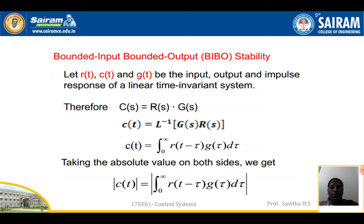Bounded input, bounded output stability. Let R(t), C(t), and G(t) be the input, output, and impulse response of a linear time invariant system. Therefore, C(s) is equal to R(s) into G(s). So C(t) equals the inverse Laplace transform of G(s) into R(s). So C(t) is equal to the integration from 0 to infinity of R(t minus tau) into G(tau) d-tau. Taking the absolute value on both sides, the magnitude of C(t) is equal to the magnitude of the integral from 0 to infinity of R(t minus tau) into G(tau) d-tau.